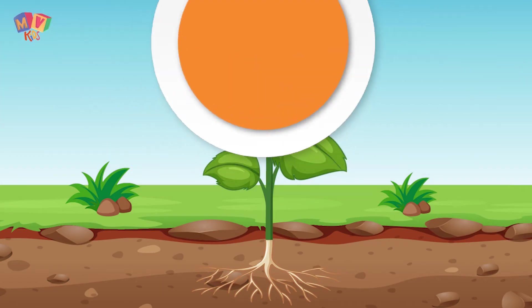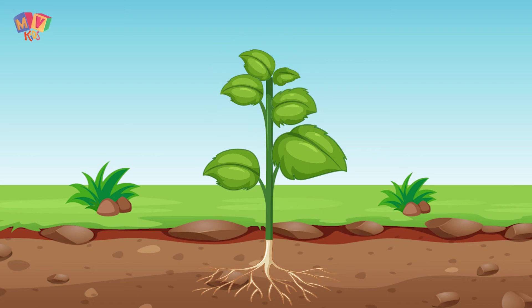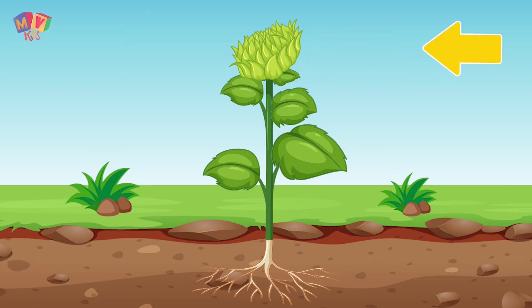The fifth stage is an adolescent plant. In this stage, the sunflower is about to bloom.